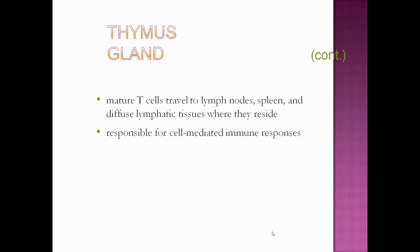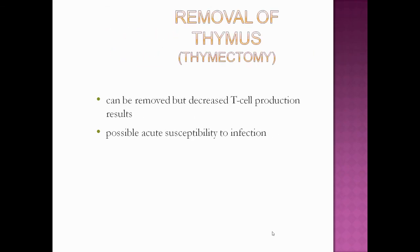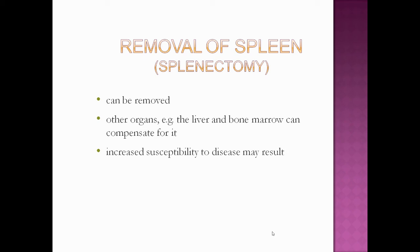Mature T cells settle in lymph nodes, spleen, and diffuse lymphatic tissue, where they are responsible for cell-mediated immune responses. Removal of the thymus — called thymectomy — results in decreased T cell production and possible acute susceptibility to infection. Removal of the spleen can be compensated by other organs such as the liver and bone marrow, but increased susceptibility to disease may result.